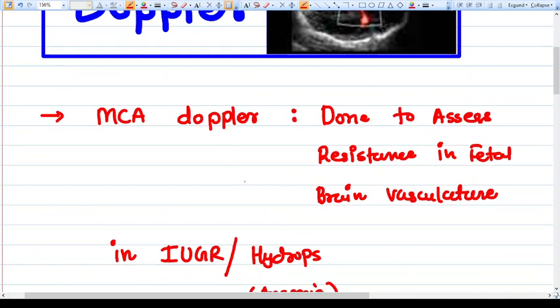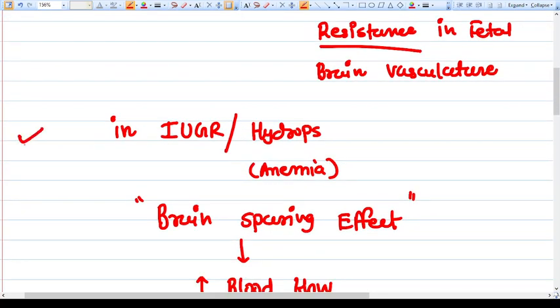The MCA Doppler is done to assess resistance in the fetal brain vasculature. In IUGR, that means intrauterine growth restriction, or in cases of fetal anemia which is common with hydrops fetalis, we do this MCA Doppler.